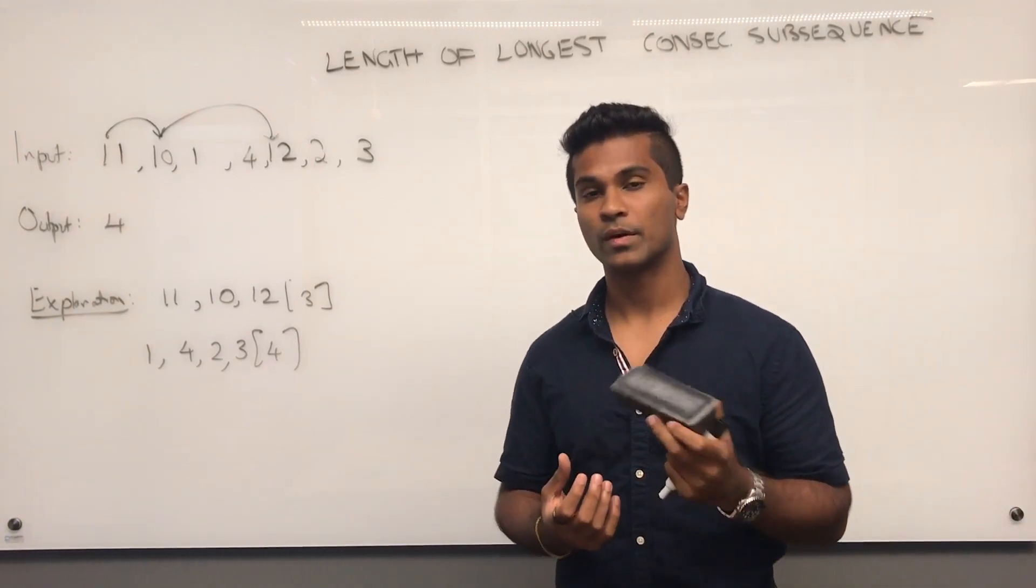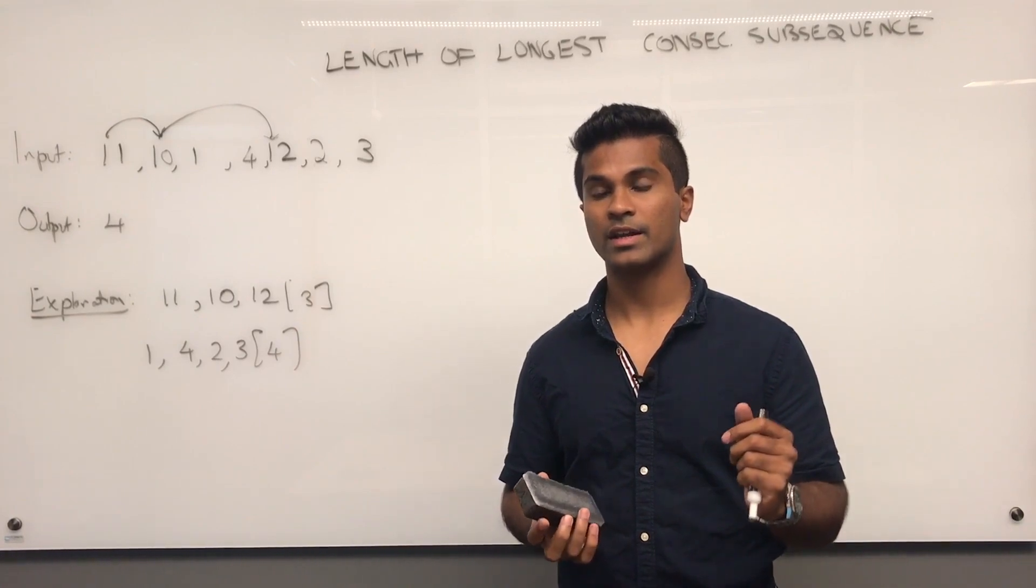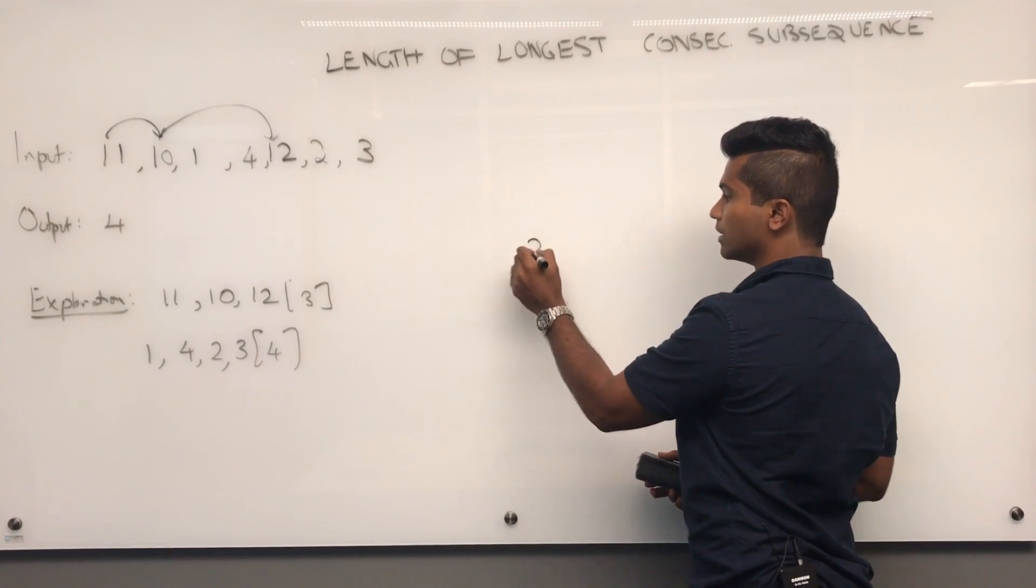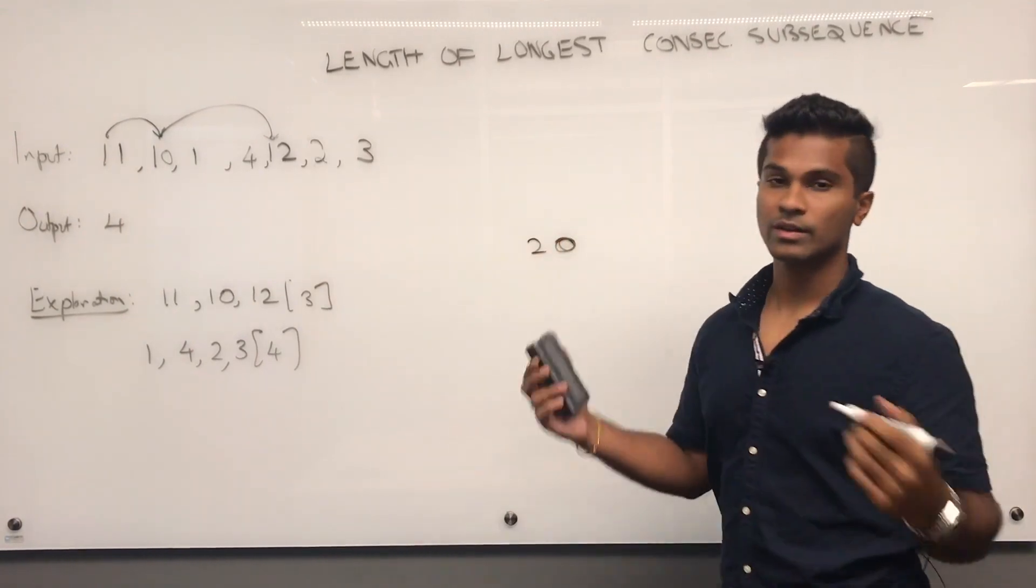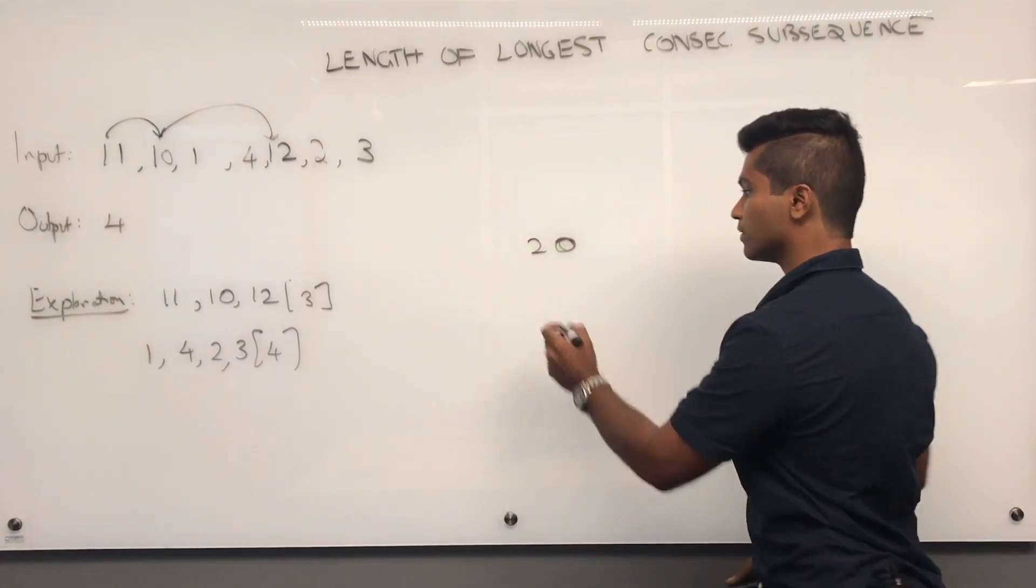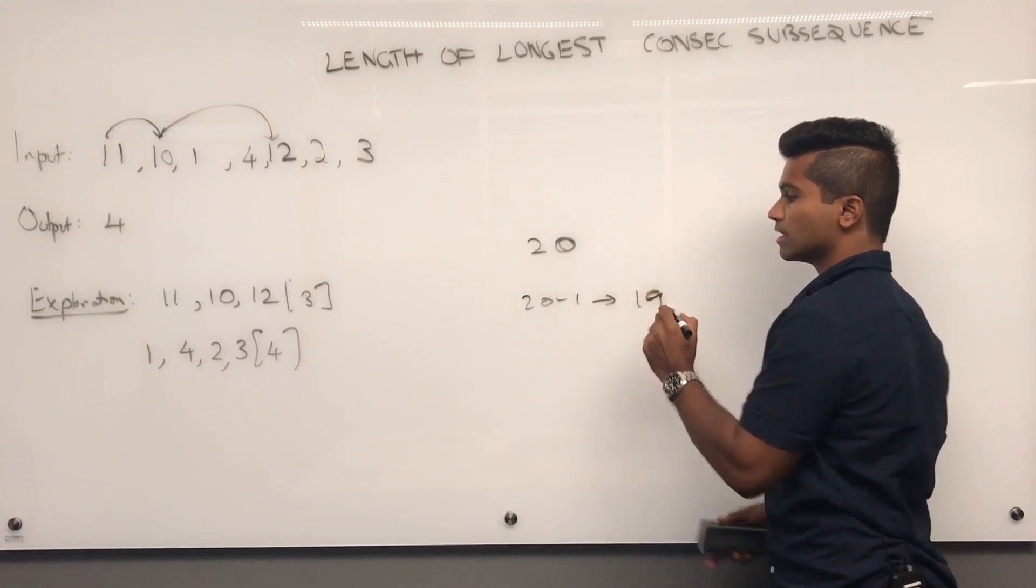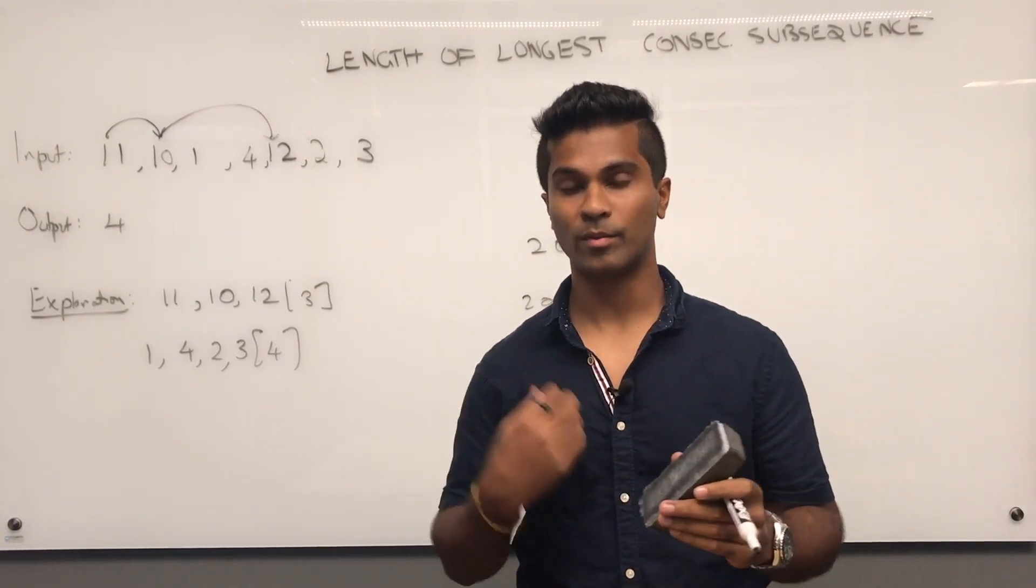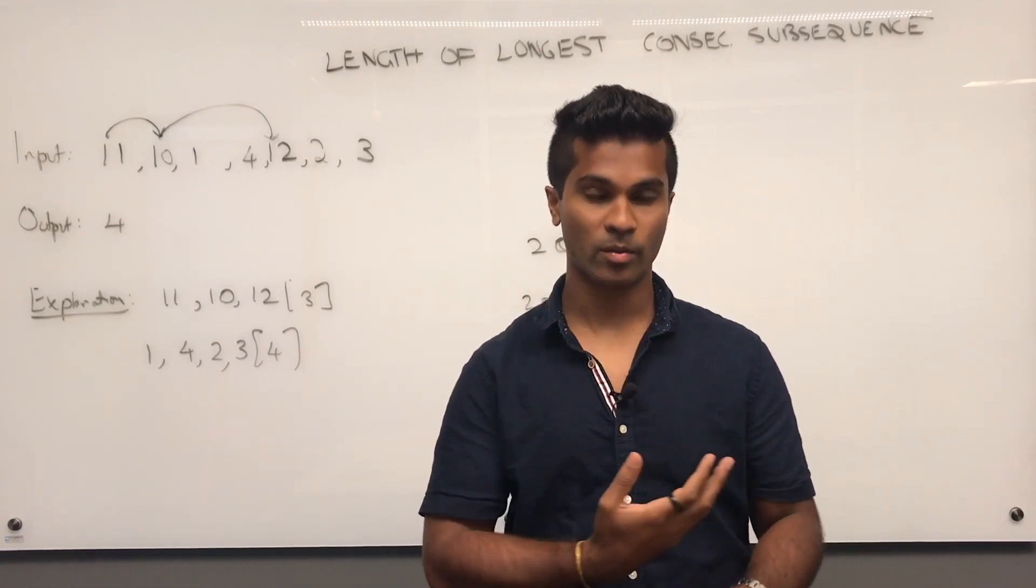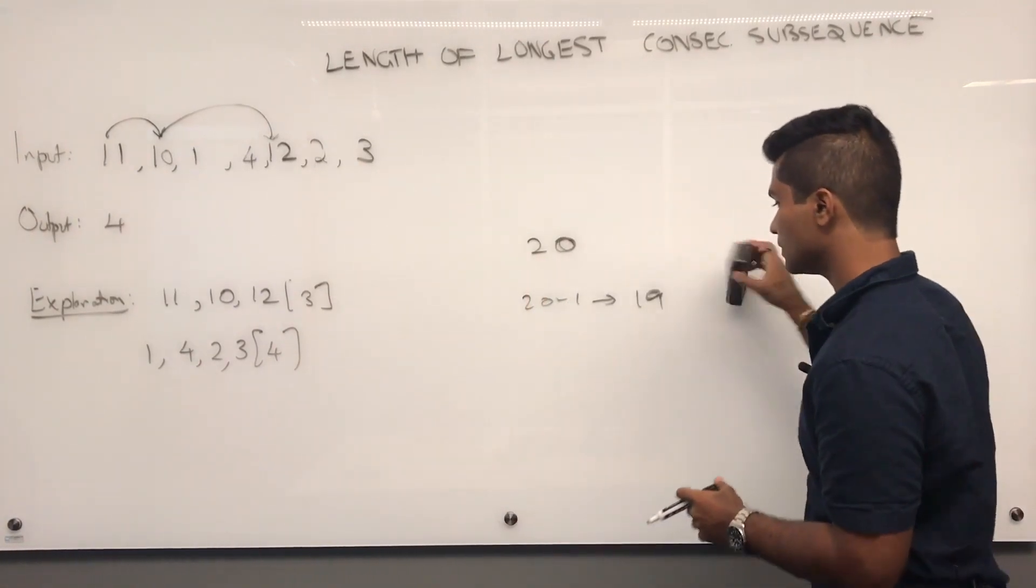And the core trick behind this problem is that anytime we're visiting a number, that number is going to first see if there is an immediately smaller number. Say if there's a 20 in the array, and 20 is going to check in the set if 20 minus 1, is 19, is in the set. Basically, what this means is if I'm a number and there's one number smaller than me, I'm going to let that number be the one that builds the subsequence.